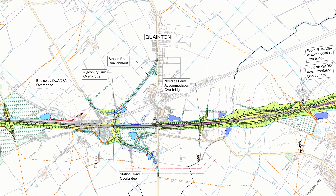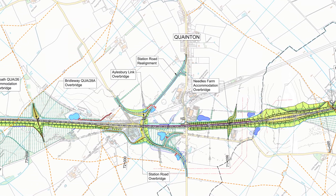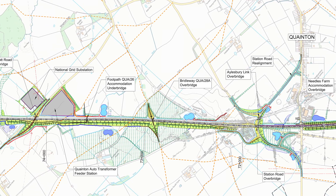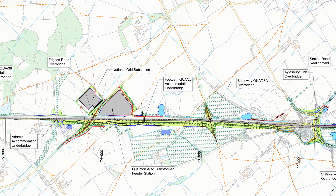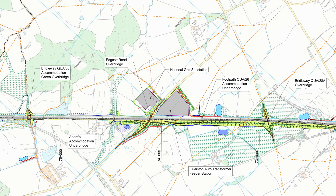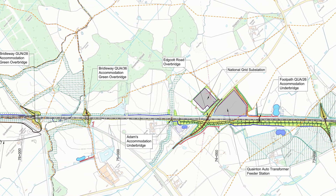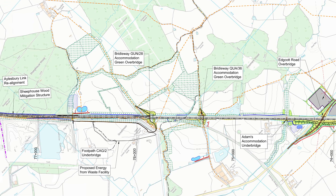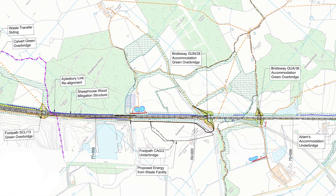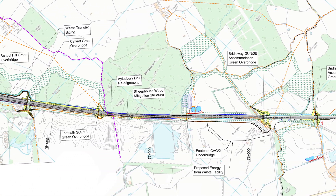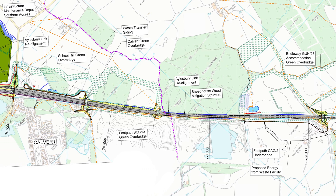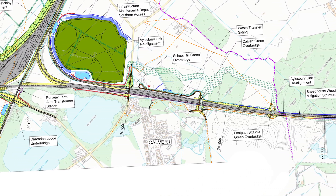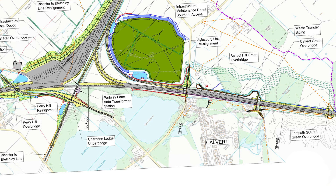In this video we'll take a closer look at the plans between Wadston and Calvert. We will see station road realignment at Quainton, a variety of over bridges and under bridges, and also a few alterations to the roads in the area, as well as the bat mitigation structure near Sheephouse Wood, which is currently in the appeals stage. We'll also take a look at the landscaping and vegetation plans. There's a lot to cover here so let's make a start.